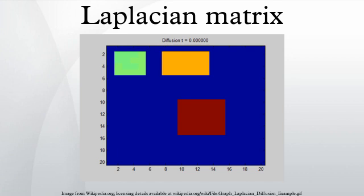The Laplacian matrix can be interpreted as a matrix representation of a particular case of the discrete Laplace operator. Such an interpretation allows one, for example, to generalize the Laplacian matrix to graphs with an infinite number of vertices and edges, leading to a Laplacian matrix of infinite size. The change of some element can be described in matrix-vector notation, giving an equation of the same form as the heat equation, where the matrix L replaces the Laplacian operator — hence the name 'graph Laplacian.'